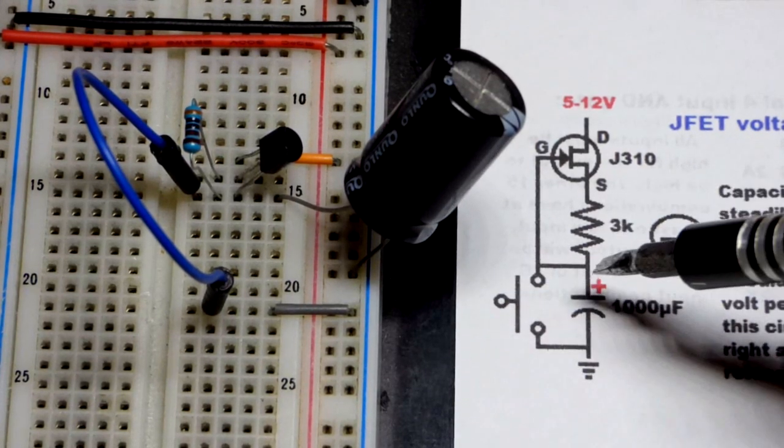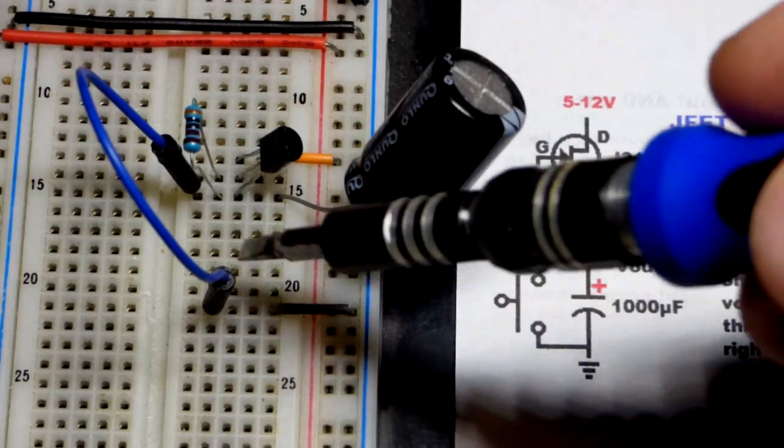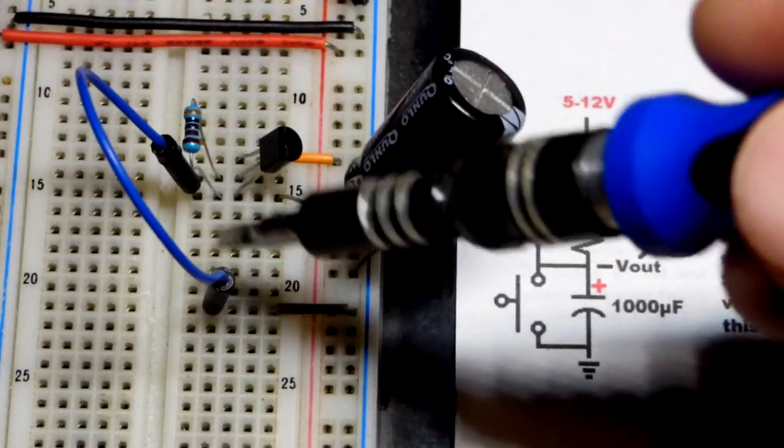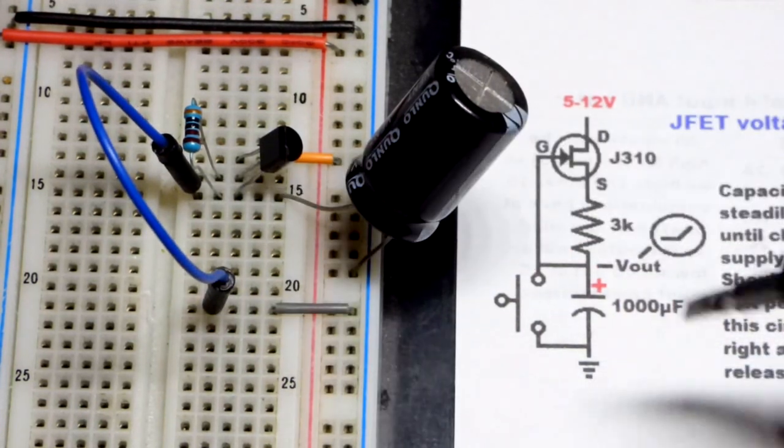We have a switch. It'll be open while the capacitor is charging. Right now we have a switch made with a jumper. It's closed right now keeping the capacitor discharged.